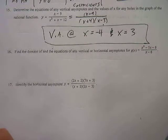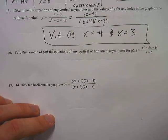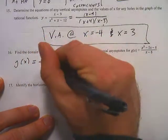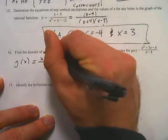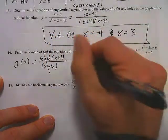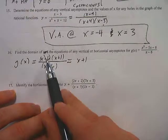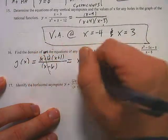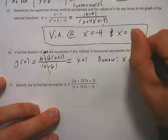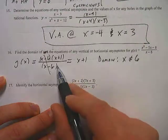Number 16 says: find the domain and the equations of any vertical or horizontal asymptotes for g(x). Let's simplify by factoring. We keep (x - 6) on the bottom, and factor the numerator to get (x - 6)(x + 1). You can cancel out the (x - 6)s, leaving just (x + 1). But you need to remember there's a hole at x equals positive 6. Therefore, when writing the domain, the domain is all real numbers except positive 6.